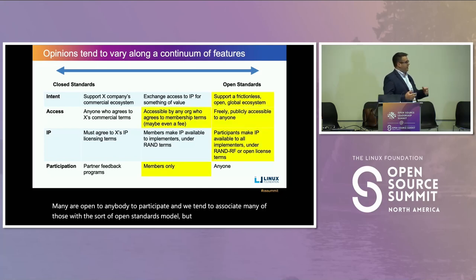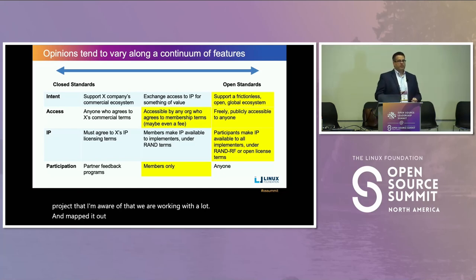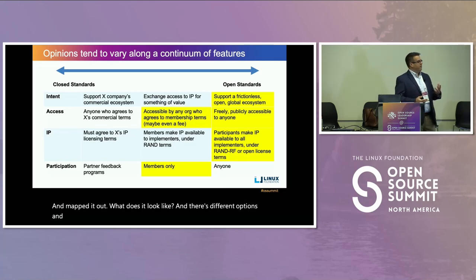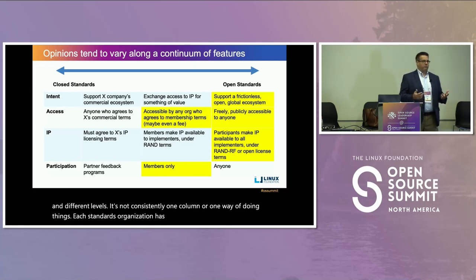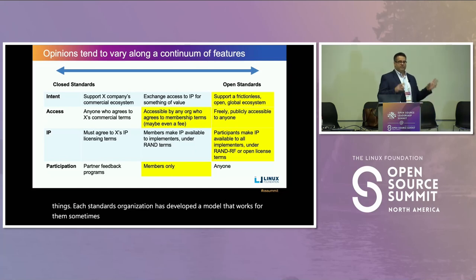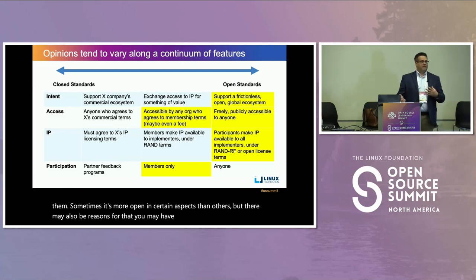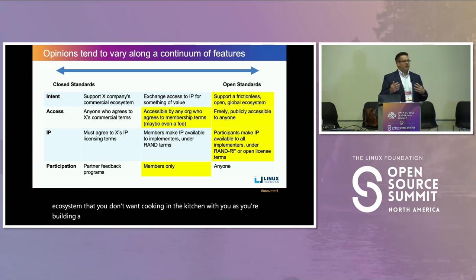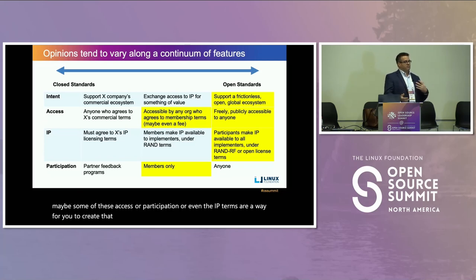I mapped out one project that we're working with and found there are different options at different levels — it's not consistently one column or one way of doing things. Each standards organization has developed a model that works for them, sometimes more open in certain aspects than others. There may also be reasons for that — you may have antagonists in the ecosystem you don't want cooking in the kitchen with you, and some of these access, participation, or IP terms are a way to create a moat to keep bad actors out.